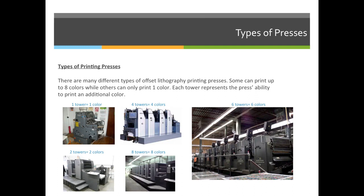What matters to you is not what it looks like or how big it is — you want to count the towers, and the towers will tell you how many colors it prints. So on the big example here on the right-hand side, if I count the towers — one, two, three, four, five, six — this is a six-color printing press. This one is an eight-color printing press. All you have to do is count the towers to know how many colors it's capable of printing.